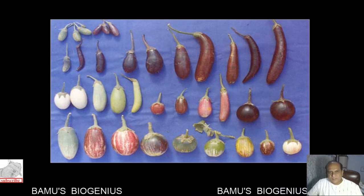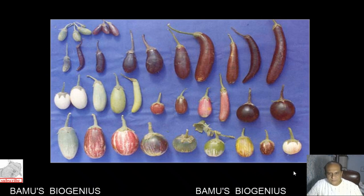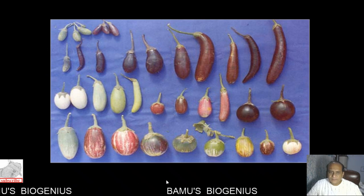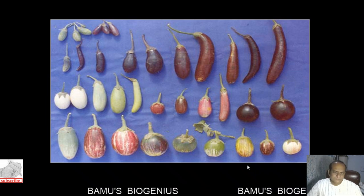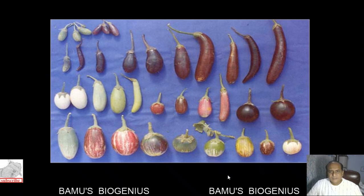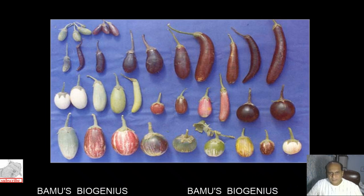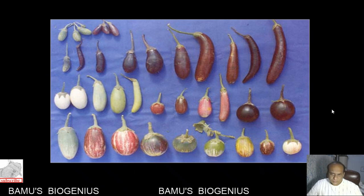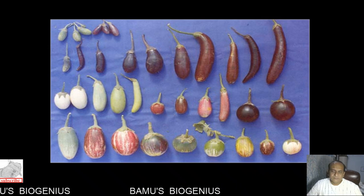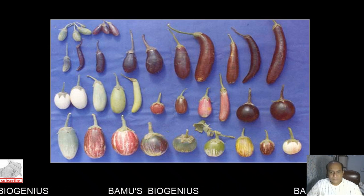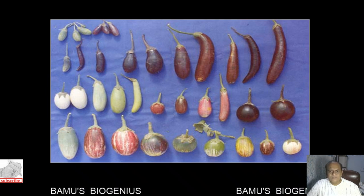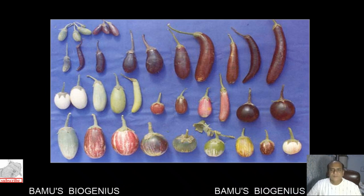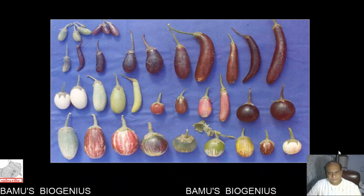Similarly, we have many different varieties of brinjal, including wild and aboriginal varieties, but in our food basket we only use three or four of them. This needs to be addressed - if we want to overcome hunger, we should cultivate and use all these kinds of varieties in our food basket. This is a simple example of one crop commonly found in our food basket.